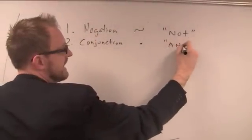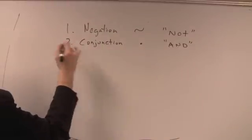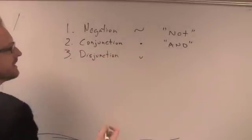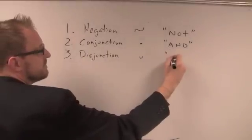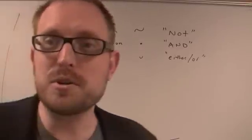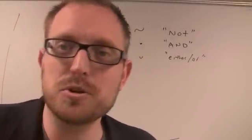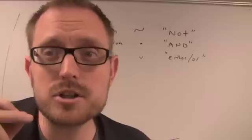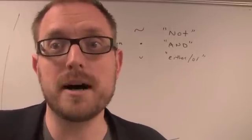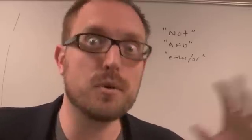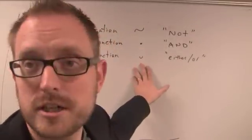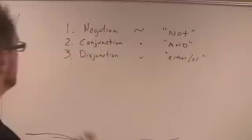The third is called disjunction, symbolized by lowercase v. It's basically any sort of either-or statement. There's really two types: inclusive disjunction and exclusive disjunction. Inclusive means either-or but possibly both, exclusive means either-or but not both. In propositional logic, the disjunction here is inclusive, so it can mean both.